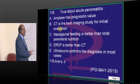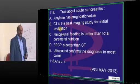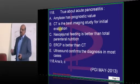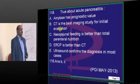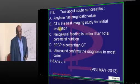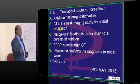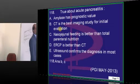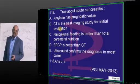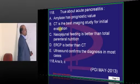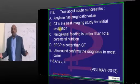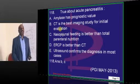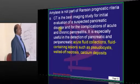Between TPN versus naso-jejunal feeding, which is better? Earlier there was a concept of nil-oral in pancreatitis, but that is no longer in vogue. Naso-jejunal feeding is better than total parenteral nutrition. CT is always better compared to ERCP. Ultrasound can only tell an edematous pancreas and can't be used to grade severity — CT is the best modality.